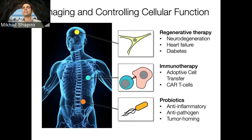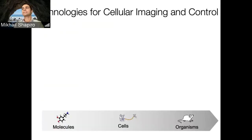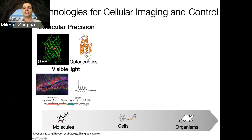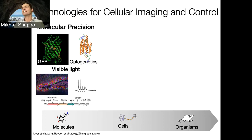After we inject these cells into somebody, we don't have very good ways to tell where they are, whether they're alive, or whether they're performing the functions we wanted them to execute. We also don't have good ways to tell them what to do based on their location inside tissues. So we want to be able to communicate with these cells as we deploy them as diagnostics and therapeutics.